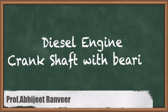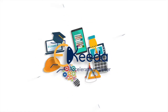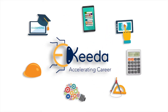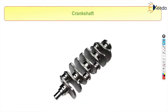Here we are going to see a little bit extra about the crankshaft. We have already seen an example of a crankshaft — it has a number of cylinders and some balance mass, also called a counterweight, which is used for keeping the crankshaft in rotation.